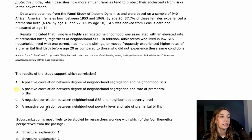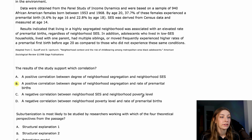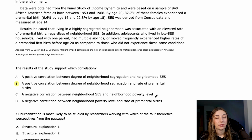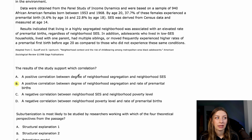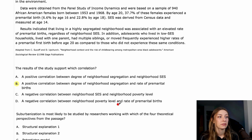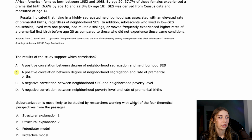Looking at C and D: C says a negative correlation between neighborhood SES and neighborhood poverty level — as SES goes up, poverty goes down. That honestly makes sense, but it's not supported by actual data in the passage, unlike B. D says a negative correlation between neighborhood poverty level and rate of premarital births — as poverty goes up, premarital births go down. That's not supported in the passage either. So B is the correct answer.